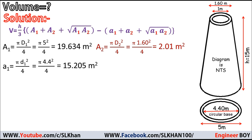And then for the top small circle, a₂ = πd₂²/4. That is π(1²)/4, because the diameter there is 1 meter, which equals 0.785 square meters.